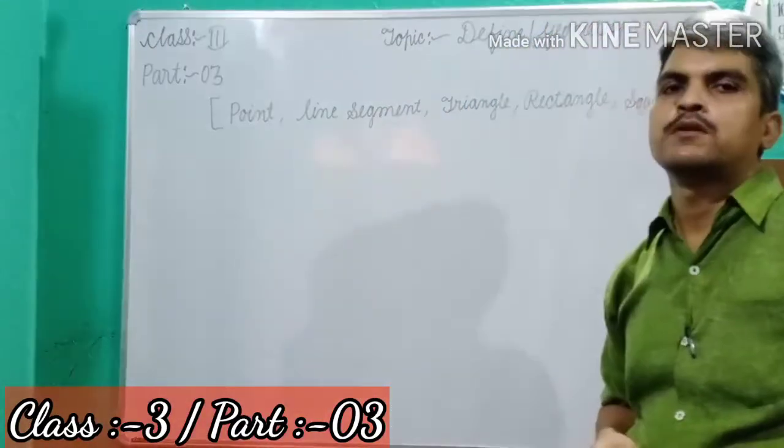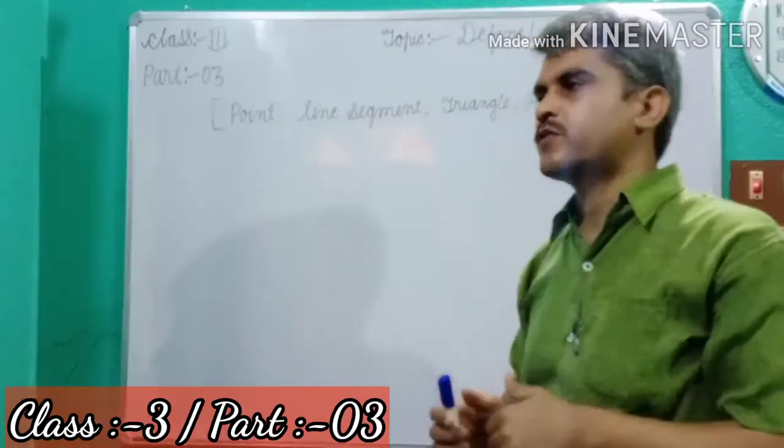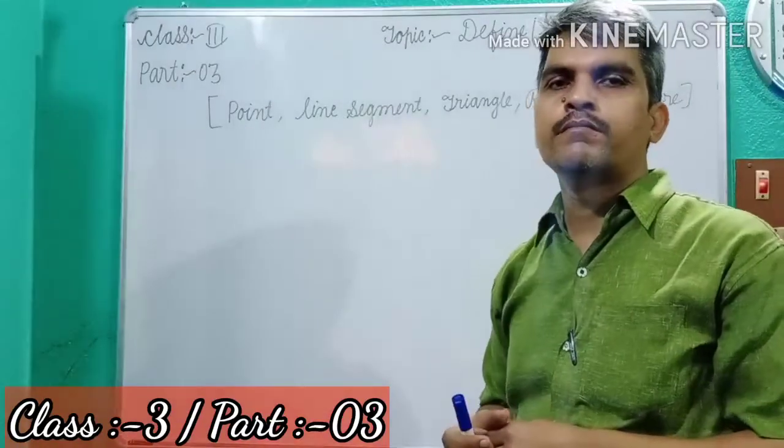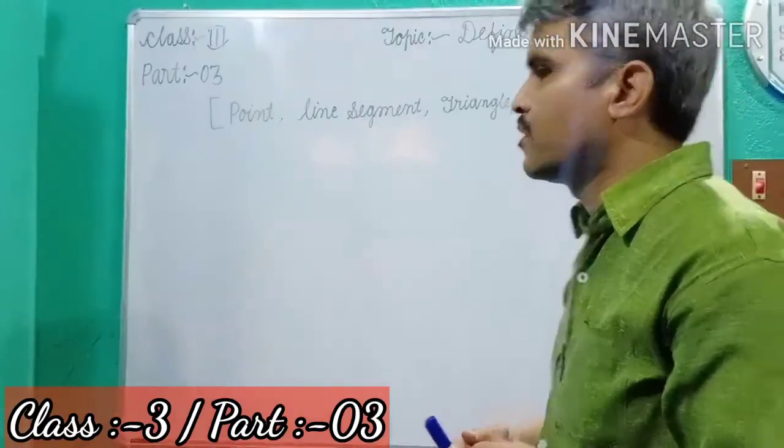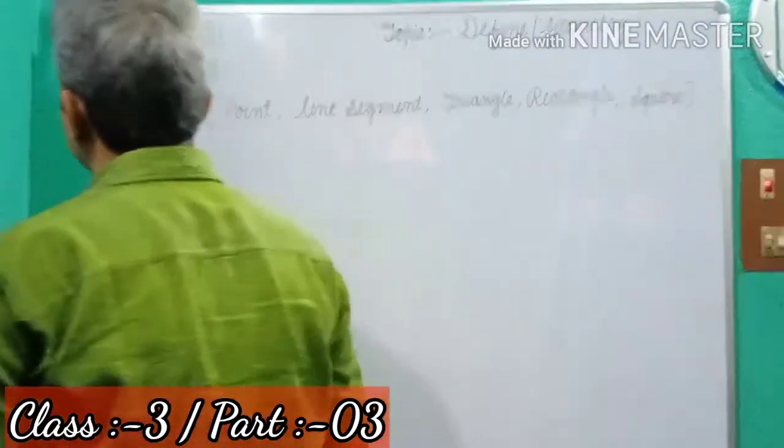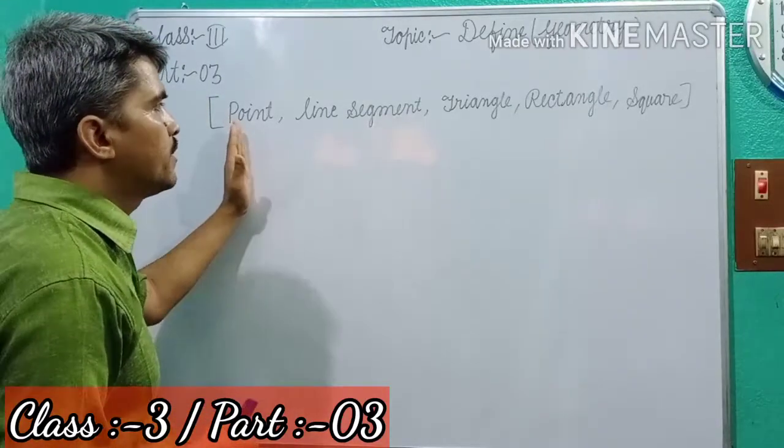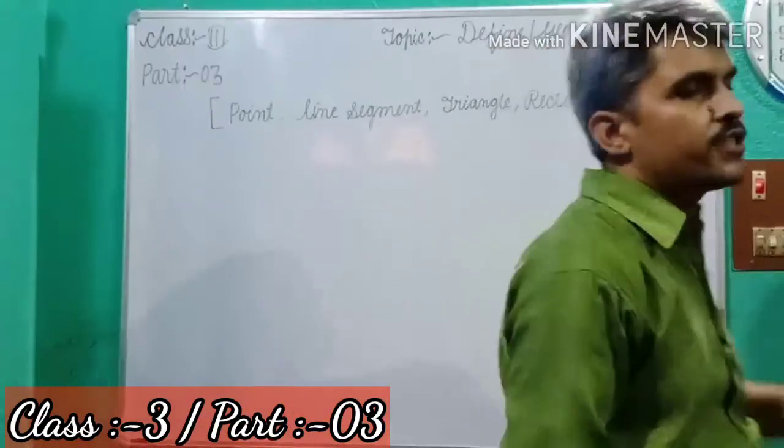today we discussed about some defines of geometrical terms for class 3 part 3. First of all, some geometrical points, first topics: point, line segments, triangles, rectangles and squares.